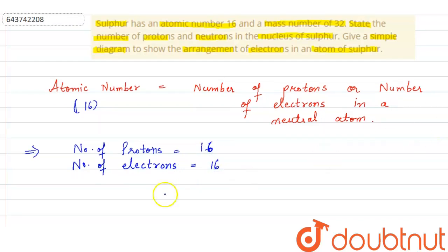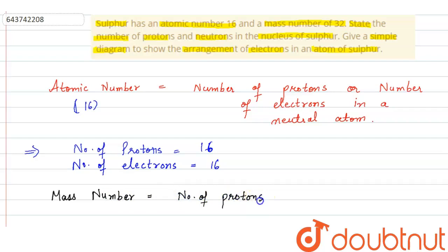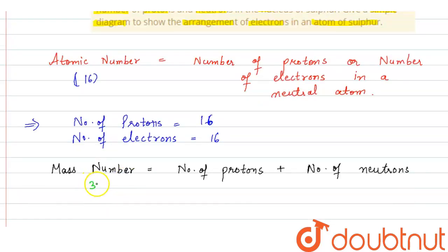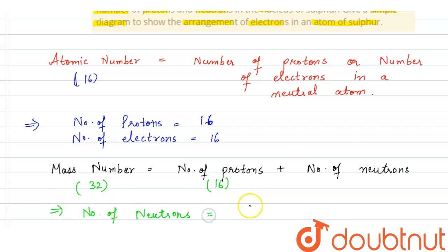Now we have to find out the number of neutrons in the nucleus of sulfur. We know that mass number is equal to the sum of the number of protons and the number of neutrons. The mass number is given as 32 and the number of protons is 16, so the number of neutrons will be equal to 32 minus 16, which equals 16.